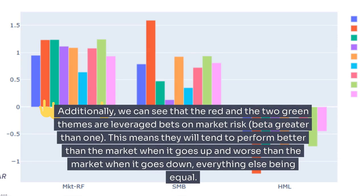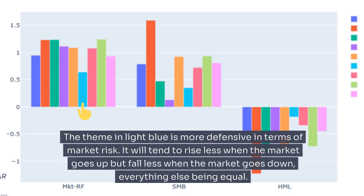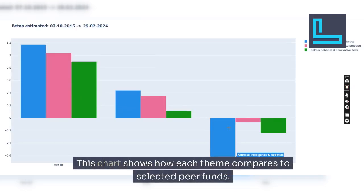Additionally, we can see that the red and the two green themes are leveraged bets on market risk — beta greater than one. This means they will tend to perform better than the market when it goes up and worse than the market when it goes down, everything else being equal. The theme in light blue is more defensive in terms of market risk — it will tend to rise less when the market goes up, but fall less when the market goes down, everything else being equal.